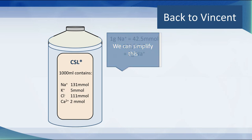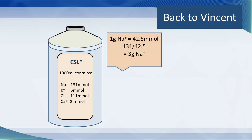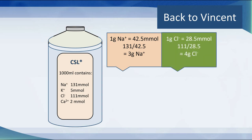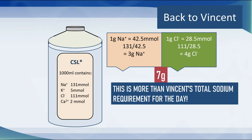We know there is 131 millimoles of sodium in this bottle — that's on the label. There are three grams of sodium. The chloride is 111 millimoles, and one gram of chloride is 28.5 millimoles, so 111 divided by 28.5 works out at four grams of chloride. Taking all the KCl, NaCl, and sodium lactate together, you end up with seven grams of table salt in this bag. Therefore, one bag of this is giving Vincent more than his entire sodium and chloride requirement for the day.